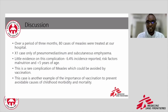In conclusion for the second case, over a period of three months, 80 cases of measles were treated at our hospital in 2021. Only one case of pneumomediastinum and subcutaneous emphysema was reported. The evidence shows this complication has a 6.4% global incidence rate, and the risk factors are mainly associated with malnutrition and children under five years old. Our message is that this rare complication of measles could be avoided by vaccination. This is another example highlighting the importance of vaccination to prevent avoidable causes of childhood morbidity and mortality in low-resource settings.